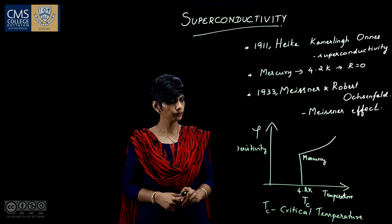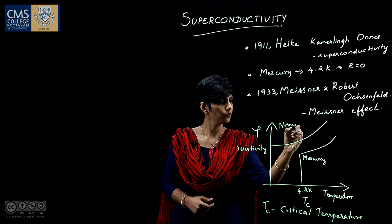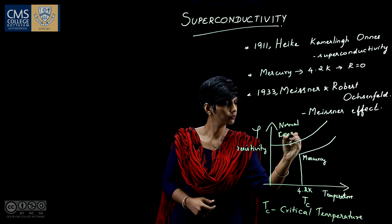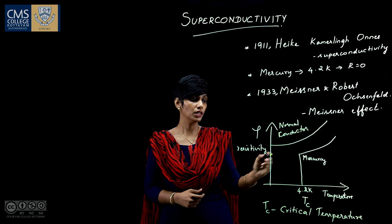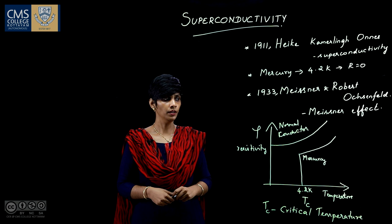Normal metallic conductors exhibit some resistance — they have some resistance even when the temperature is decreased. As you see in the graph, normal conductors have some resistivity, but superconductors have zero resistance near absolute temperature. This is because normal conductors have impurities and defects in the material which resist the flow of electrons.